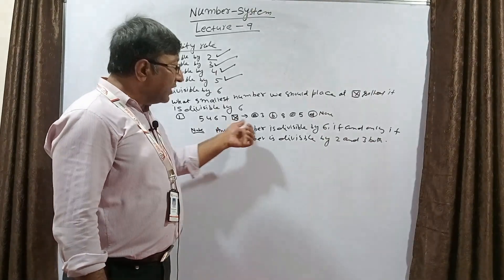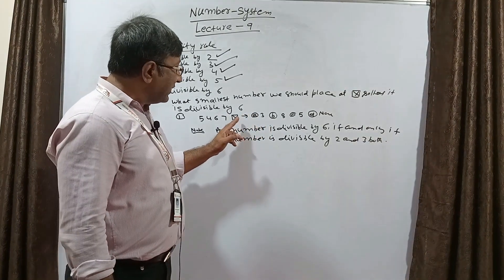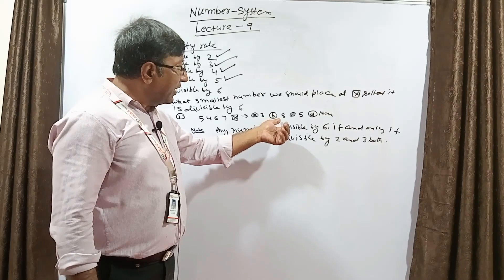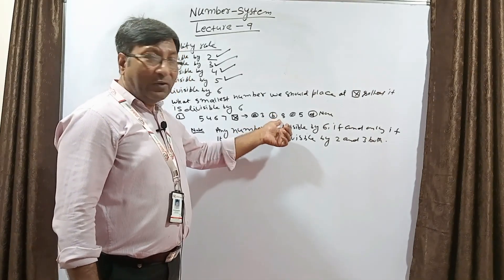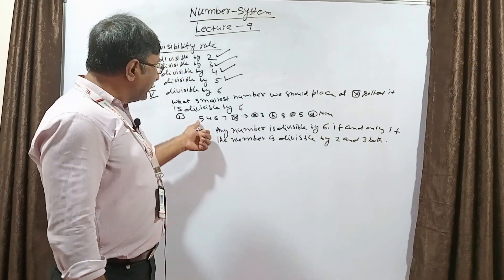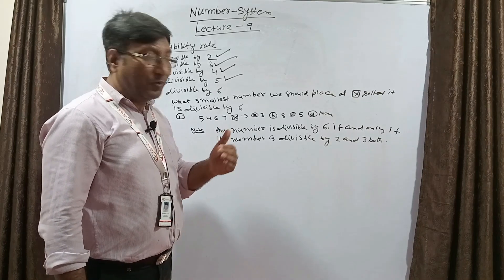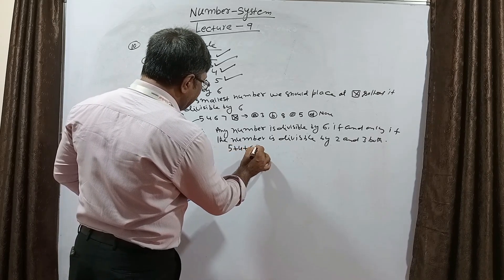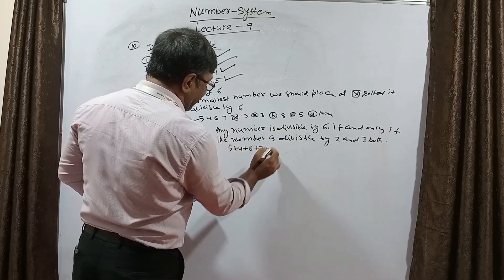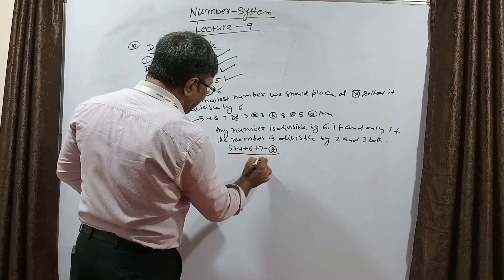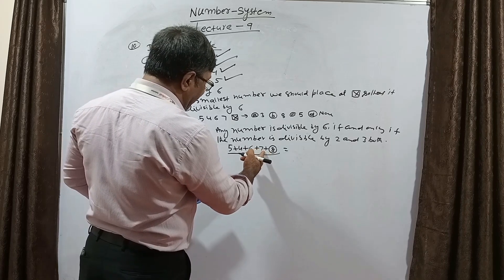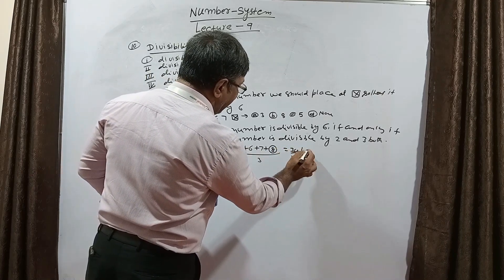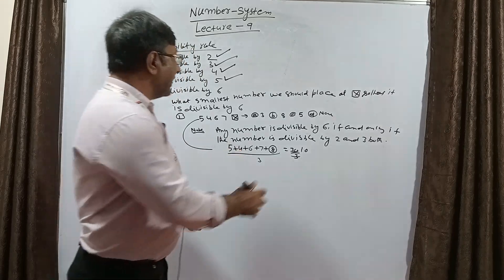So we take a number from the options which is even, because if the unit digit is even it will be divisible by 2. The unit digit should be an even number. In our options, only one option is even — so my answer may be 8 or none. Now for 3, we add the digits: 5 + 4 + 6 + 7, and placing 8 at the star: 8 + 7 = 15, 15 + 6 = 21, 21 + 4 = 25 + 5 = 30. And 30 ÷ 3 = 10, so 30 is totally divisible by 3. So our correct answer is 8.